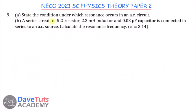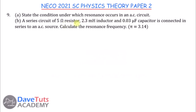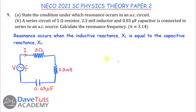Resonance in an AC circuit occurs when the inductive reactance equals the capacitive reactance. In this series circuit with a 5 Ω resistor, 2.3 mH inductor, and 0.03 μF capacitor connected to an AC source, we need to find the resonant frequency given π = 3.14. At resonance, XC = XL, meaning 1/(2πFC) = 2πFL.